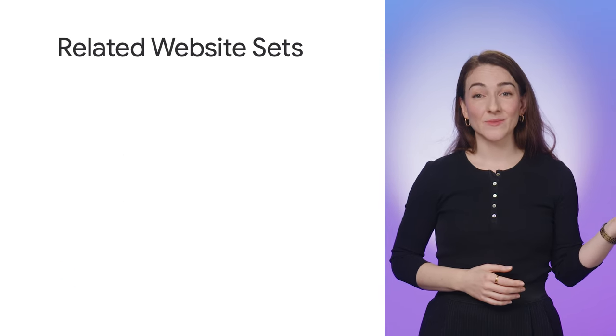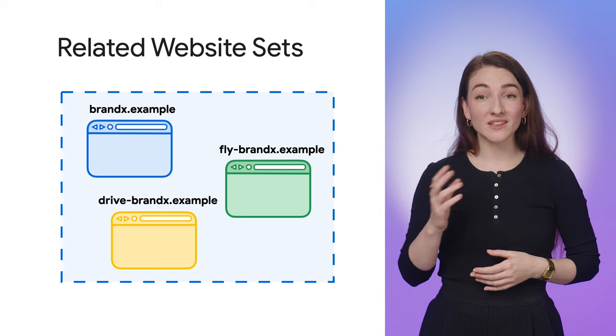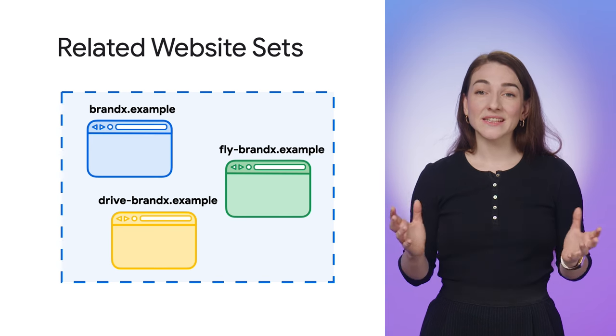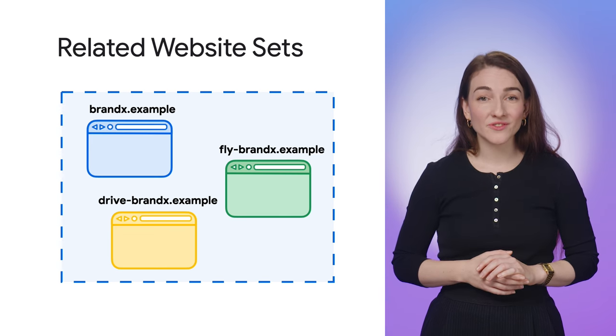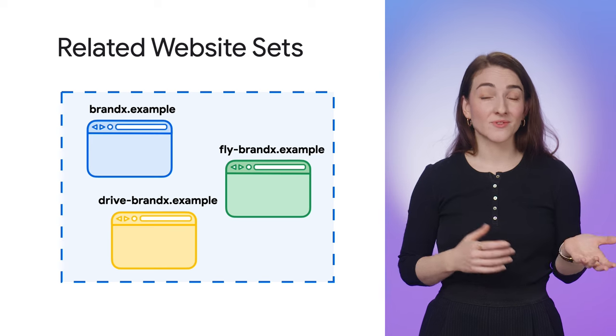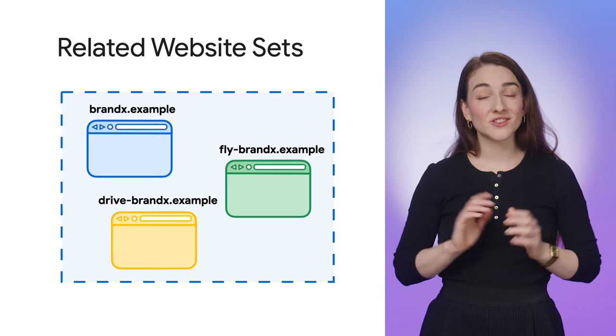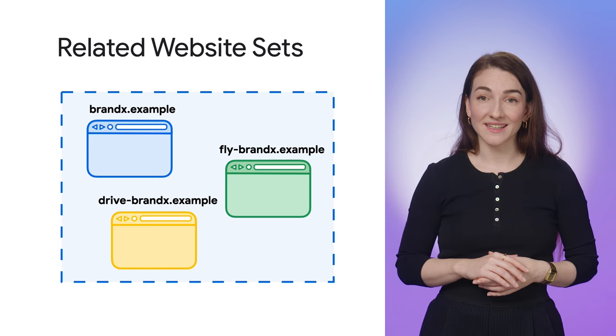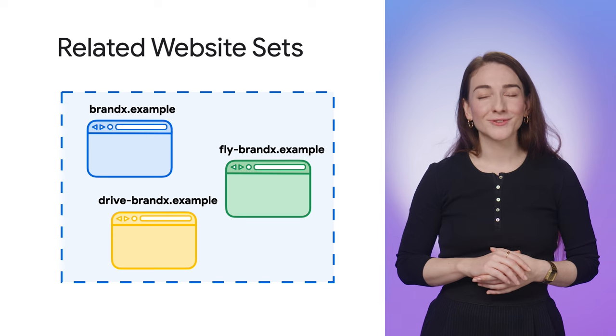If you're using Storage Access API across a small group of meaningfully linked sites, Related Website Sets can offer a smoother user experience without prompts for sites within a set, and additional functionality for the top-level site — not just the iframe — to grant storage access. There is also a wider set of purpose-built APIs that may allow you to migrate away from cross-site cookies entirely. For example, your identity provider may support FedCM to let you handle sign-in without cookies.